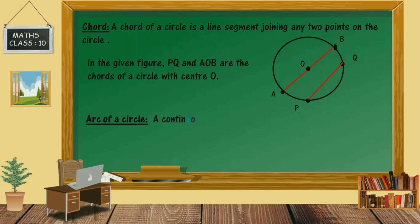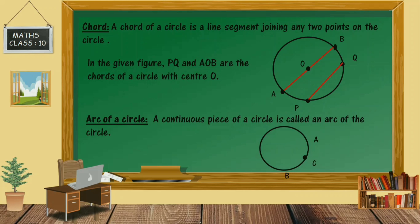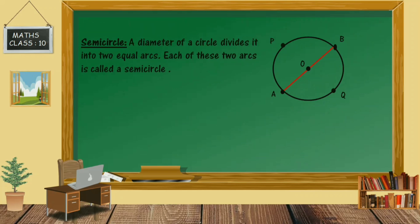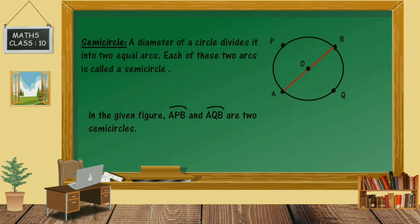Next is the arc of a circle: it is a part of the circumference of a circle. Next is the semicircle: a diameter divides a circle into two equal arcs, and each of these arcs is called a semicircle. In the given figure, arc APB and arc AQB are the two semicircles.